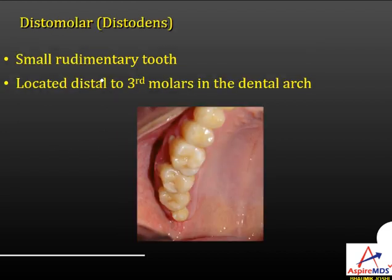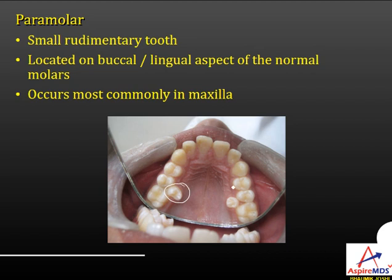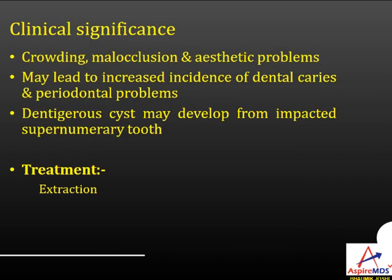Distomolars are small rudimentary teeth located distal to the third molar. Paramolars are small rudimentary teeth located on the buccal or lingual aspect of normal molars or premolar area, most commonly in the maxilla. Clinical significance: these teeth cause crowding, malocclusion, or aesthetic problems; may increase incidence of dental caries; and from an impacted supernumerary tooth a dentigerous cyst may develop. Usually they should be extracted if causing problems.